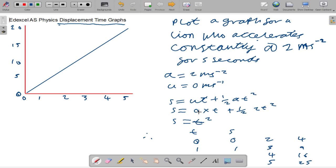So if we look at this example: plot a graph for a line who accelerates constantly at 2 meters per second squared for 5 seconds, with a being 2 and u being 0. We can use s equals ut plus half at squared, and this gives us s equaling t squared.